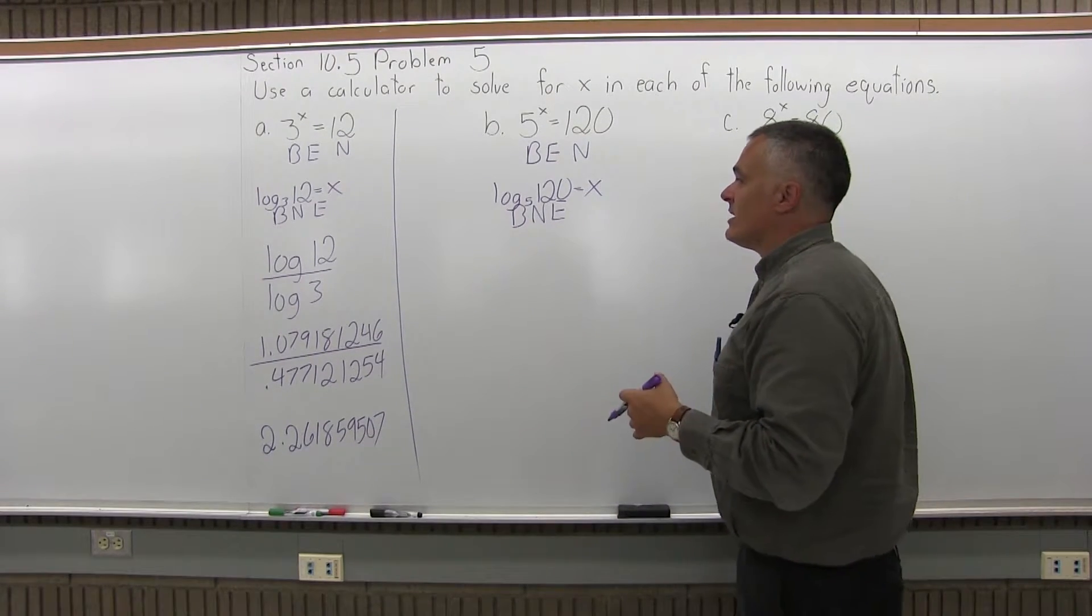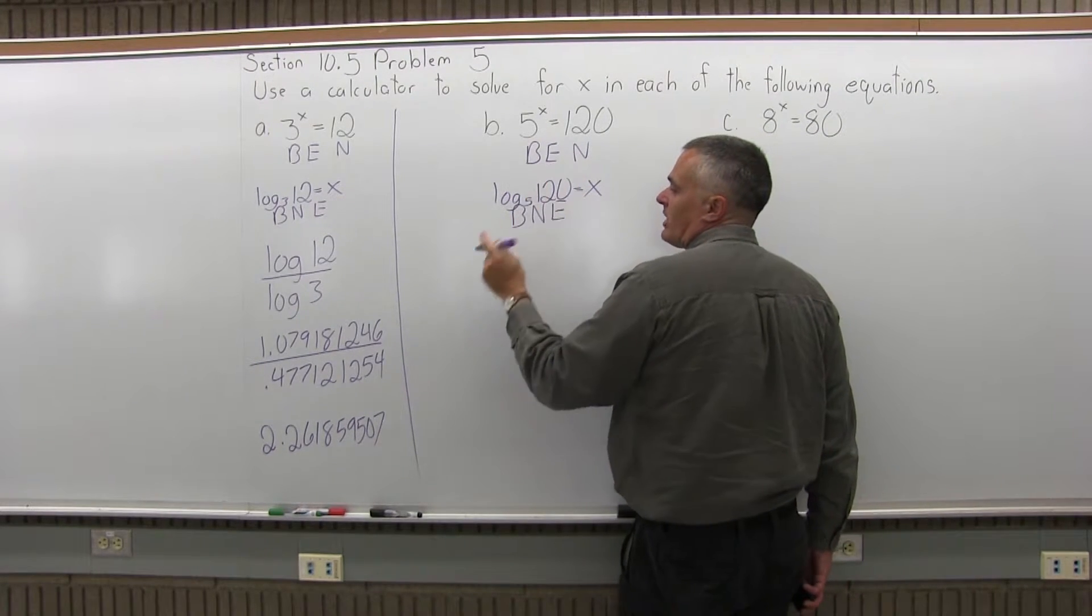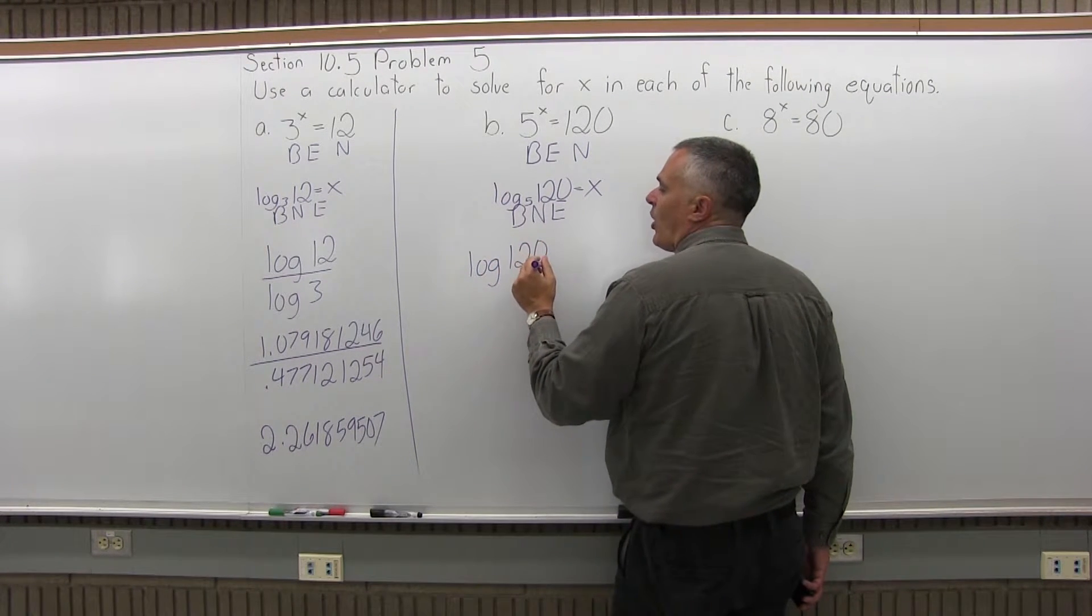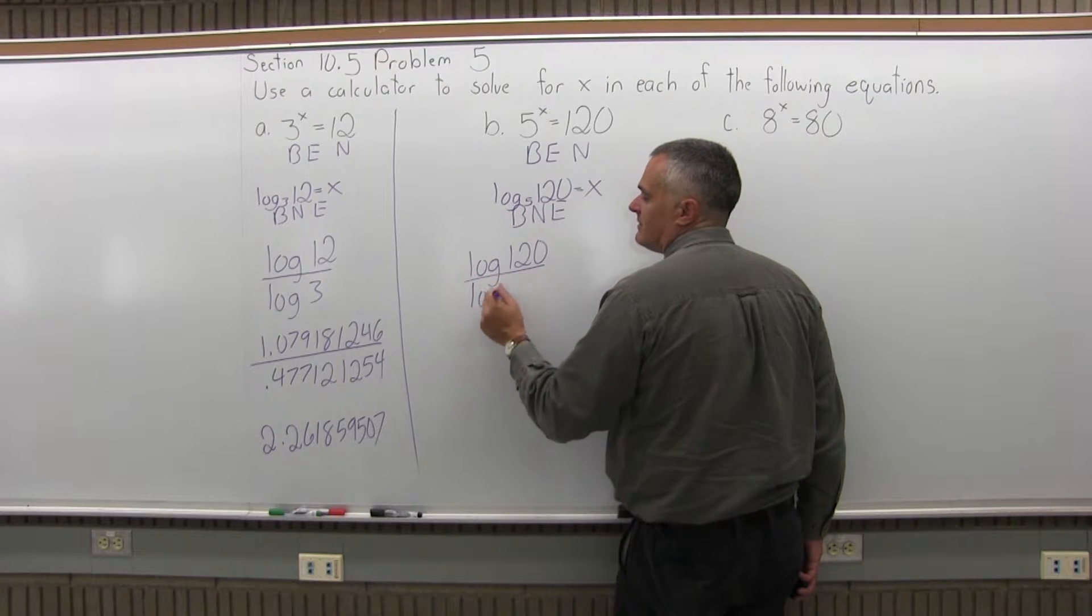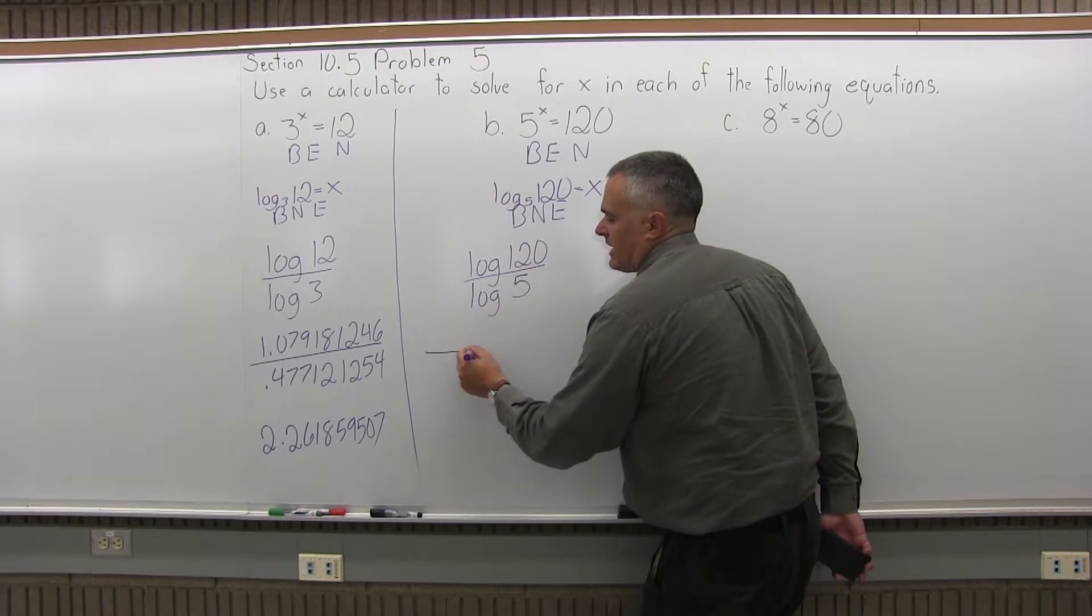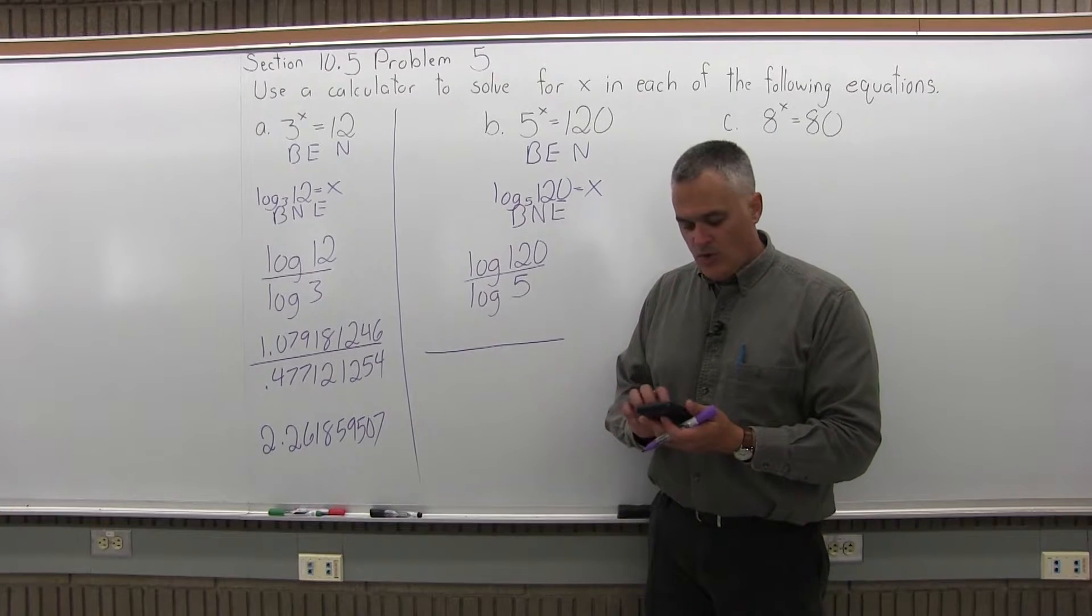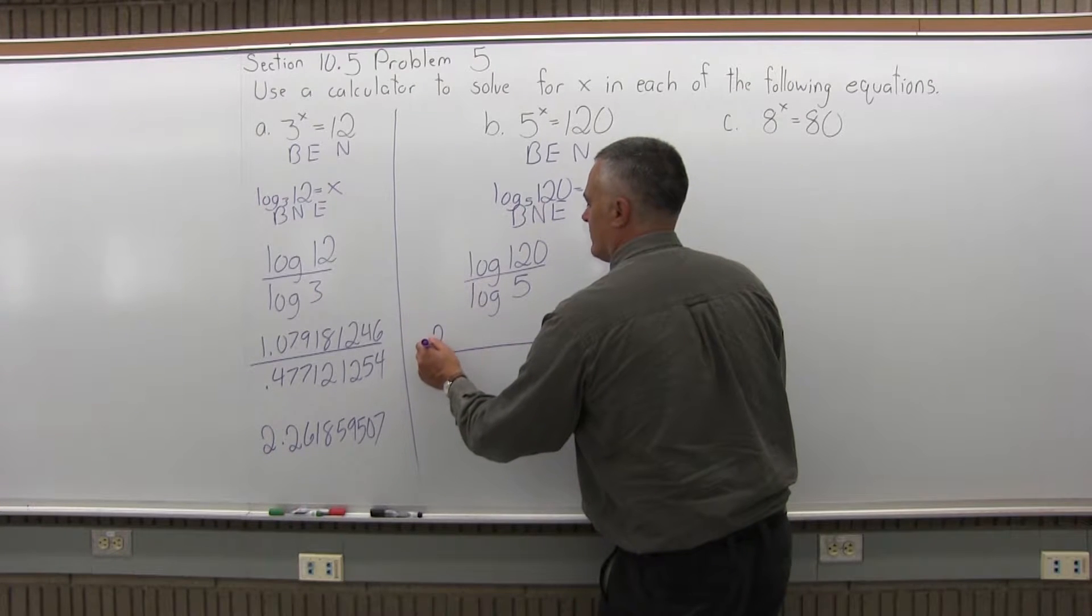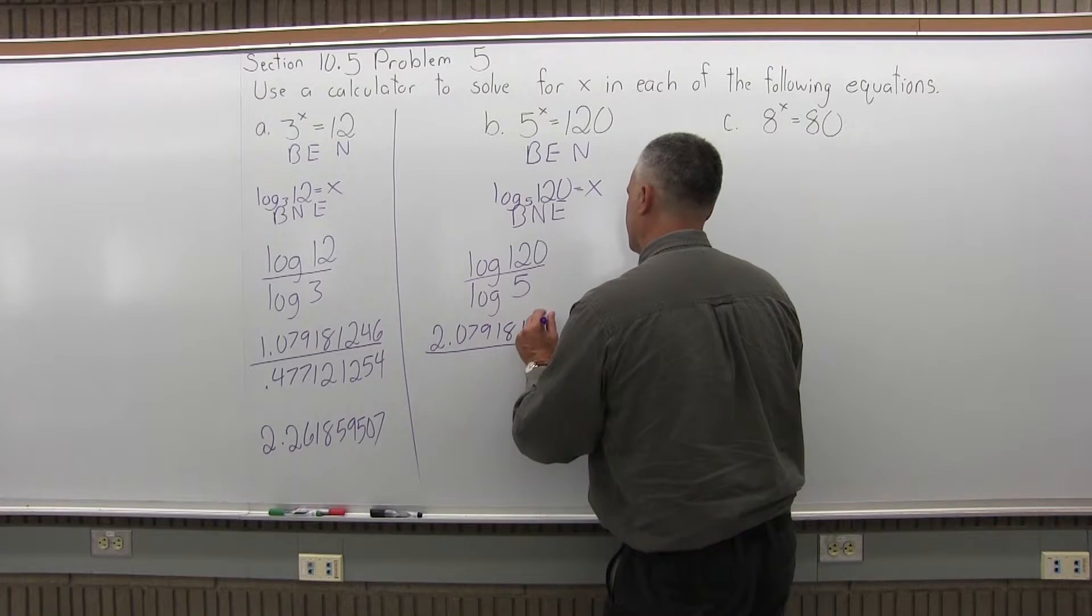Now, my calculator can do that by using the change of base formula. So I'm going to have the common log of the number in the numerator of a fraction, so common log of 120, over the common log of the base, so over common log of 5. And again, you're going to get some big, ugly fraction that you can divide out with your calculator, and it'll give you the answer. So in the numerator, the common log of 120, the calculator tells me very easily, is 2.079181246.